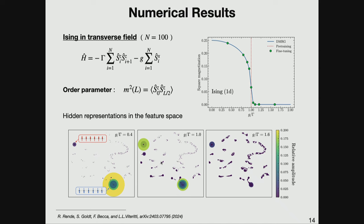For the Ising model on a chain of 100 sites, we pre-train at magnetic field h=1, which is the second-order phase transition point. We fine-tune at all other points and are able to match MRG calculations for the square magnetization, the order parameter. We can also examine the feature space: the clusters are fixed, and the fully connected network only changes the relative weights. At the transition, we have two clusters — all spin-up and all spin-down — with large amplitude. Decreasing the magnetic field, there is symmetry breaking and one configuration dominates. Increasing the magnetic field, the all-spin-up and all-spin-down amplitudes decrease while other configurations increase, which is the correct behavior since in the limit of infinite magnetic field all configurations have the same amplitude.